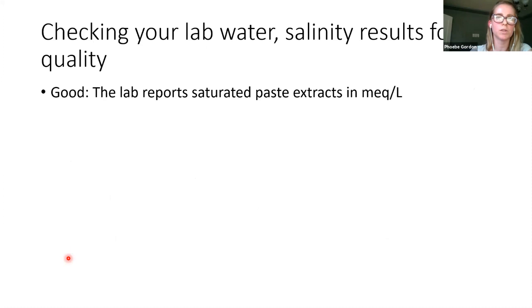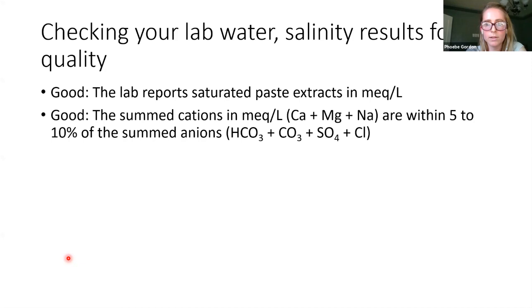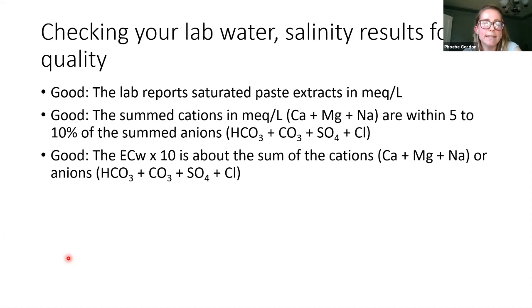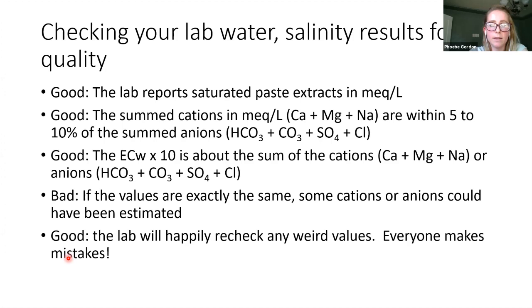There are some tricks to check for quality in lab reports. If the lab reports saturated paste extracts in milliequivalents per liter, that's a good thing. If you add the cations and anions in either a saturated paste extract or a water test, they should be within about five to ten percent of each other. If they're exactly the same, that means something's probably been estimated. If you multiply the EC of your water by ten, it should be about the sum of either the cations or anions in milliequivalents per liter—that's a good sign.